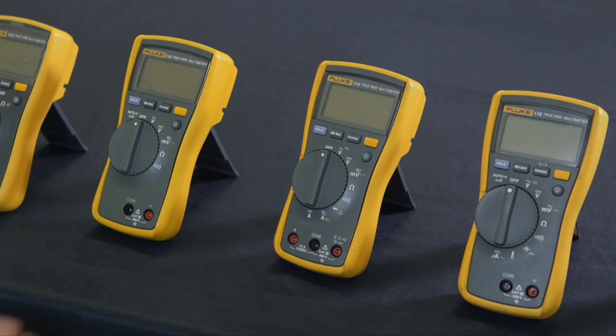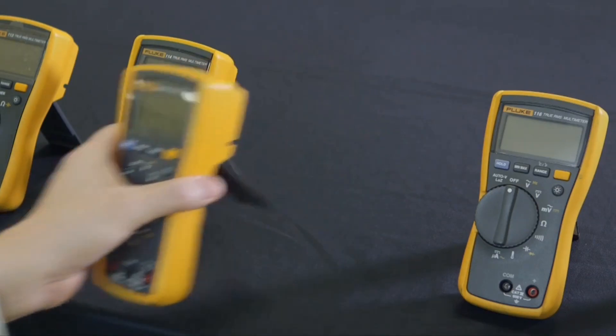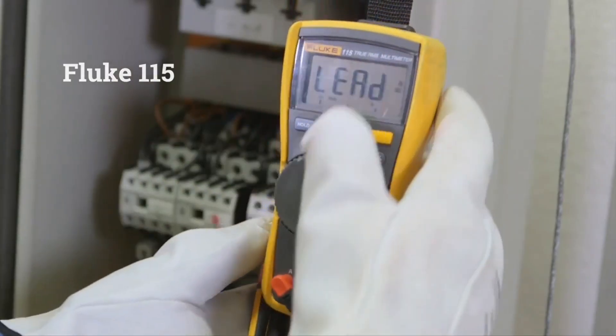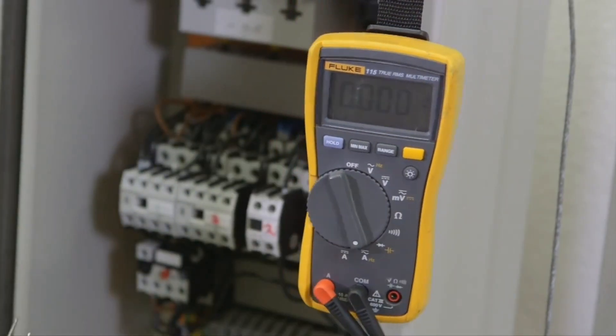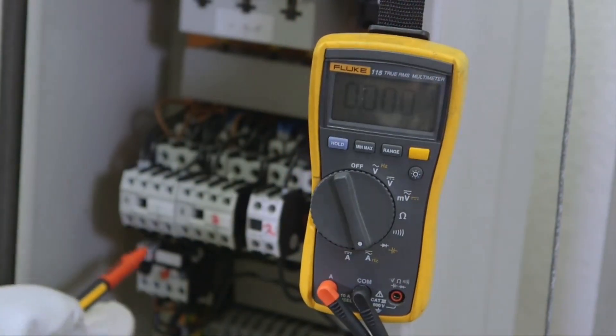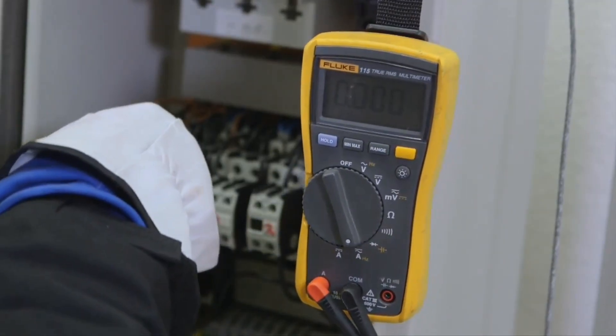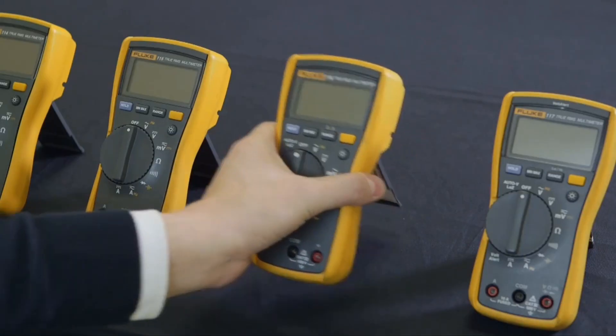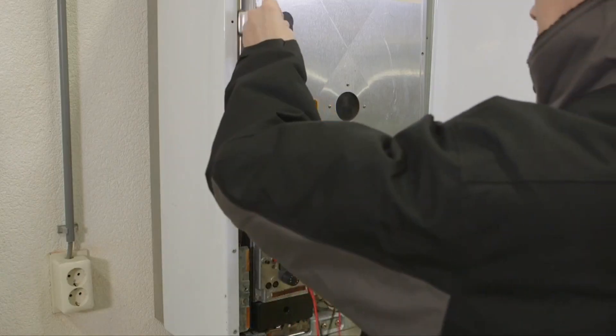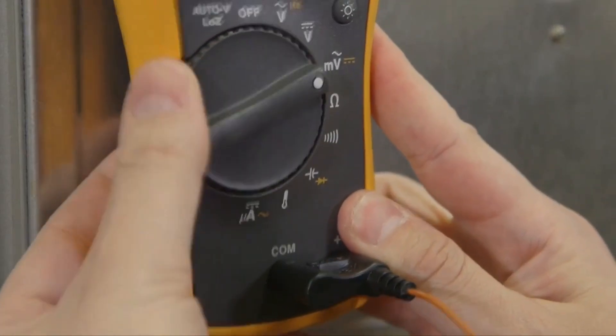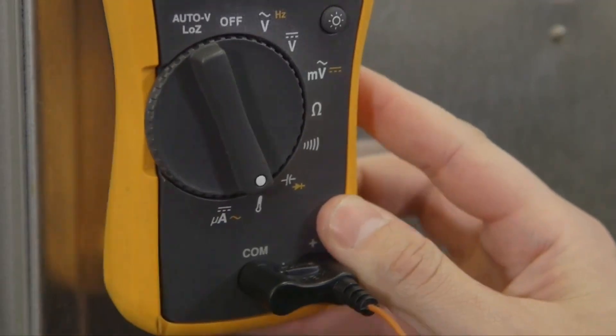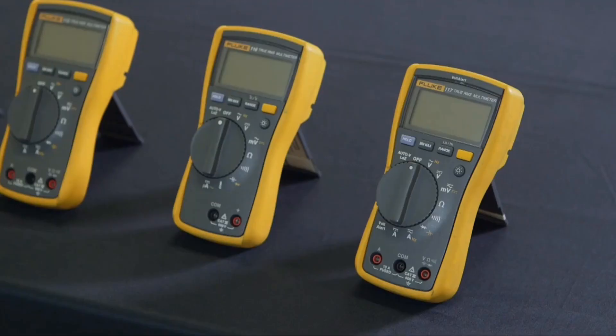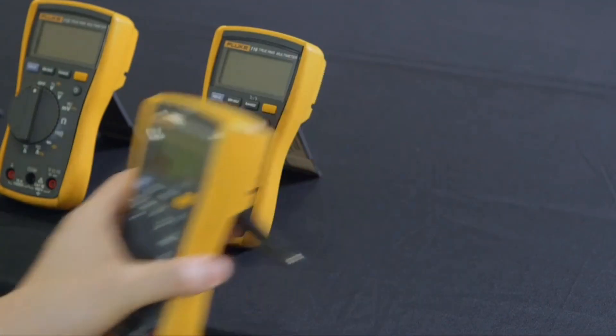The Fluke 115 includes current measurement. The Fluke 116 was developed for troubleshooting heating, ventilation, and air conditioning equipment. This meter has a microamps feature to detect problems with flame sensors and also offers a built-in thermometer.